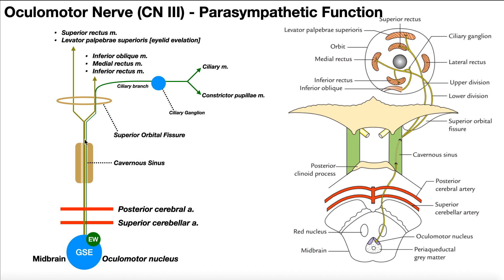Once the nerve exits the cavernous sinus, something happens. If we look at the somatic component, it bifurcates — we get one division going left, which is the upper division, and one going right, which is the lower division. The green parasympathetic part from the Edinger-Westphal nucleus actually continues with the lower division.